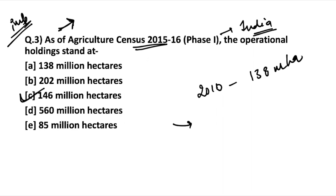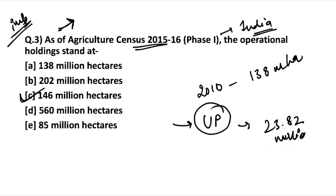In terms of states, which state has the largest number of operational holdings, or the largest number of farmers? Uttar Pradesh has topped the 2015-16 census with 23.82 million farmers. A question may come in the examination about which state topped the agriculture census 2015-16 in terms of operational holdings — it is Uttar Pradesh, followed by Bihar.